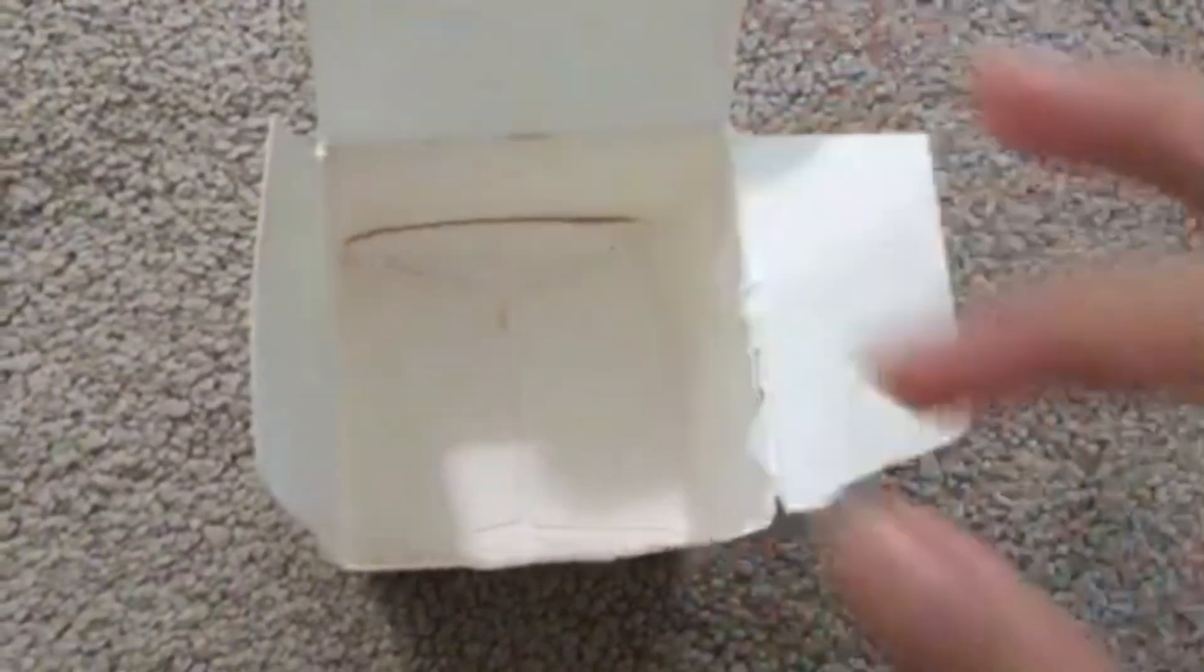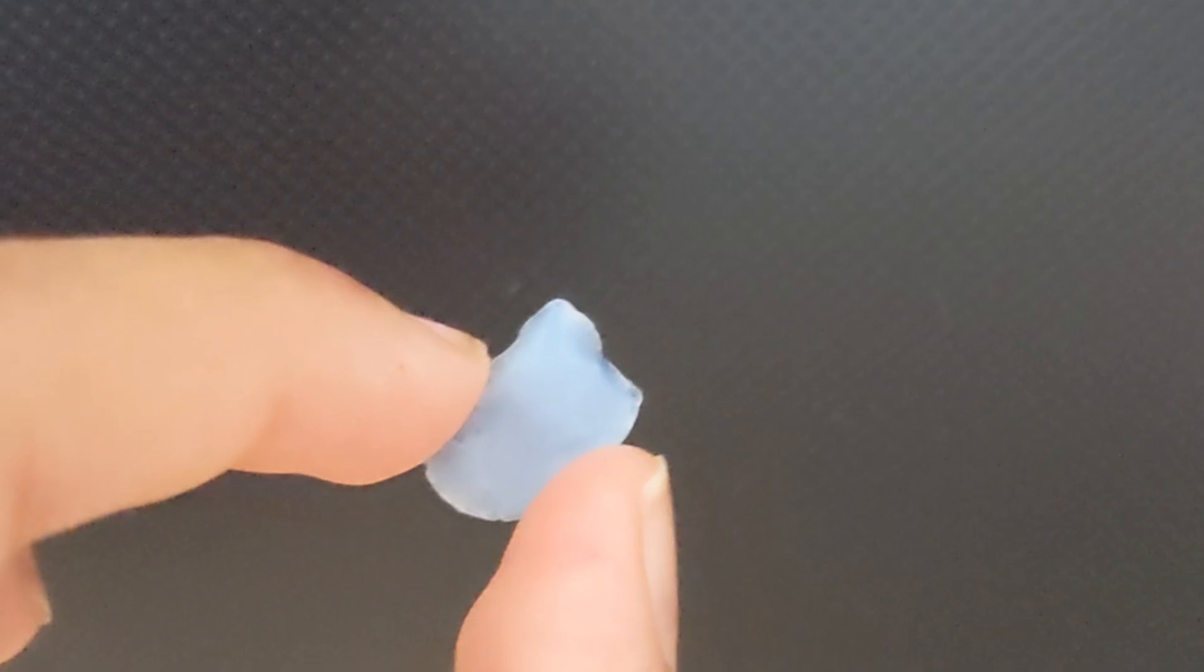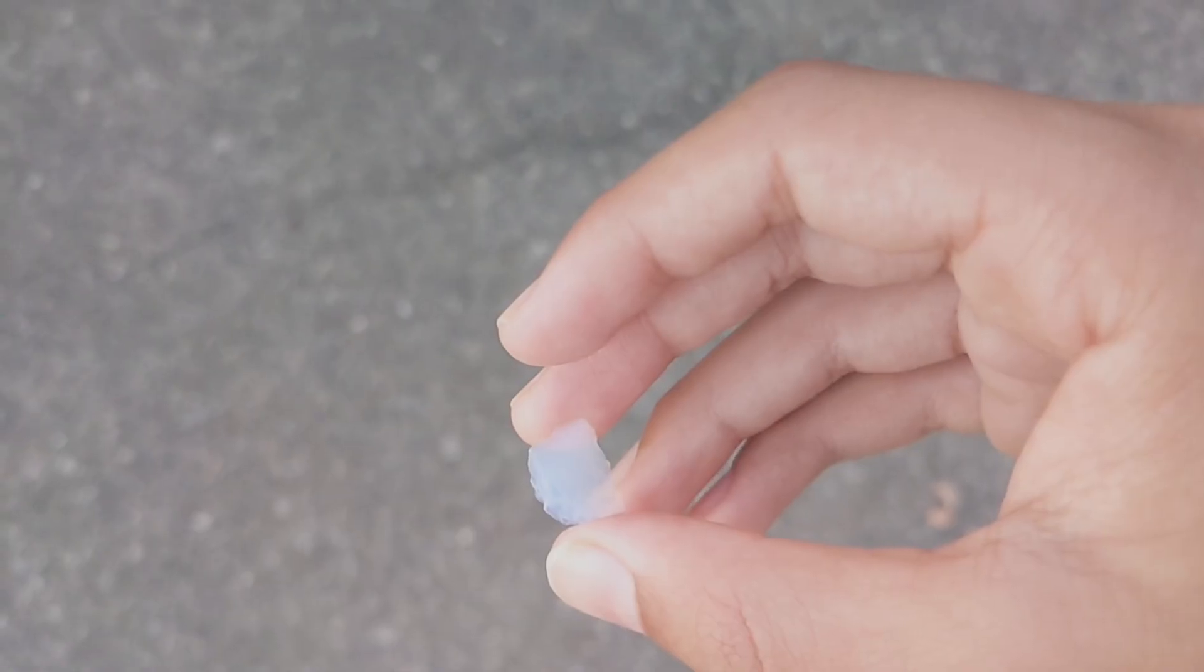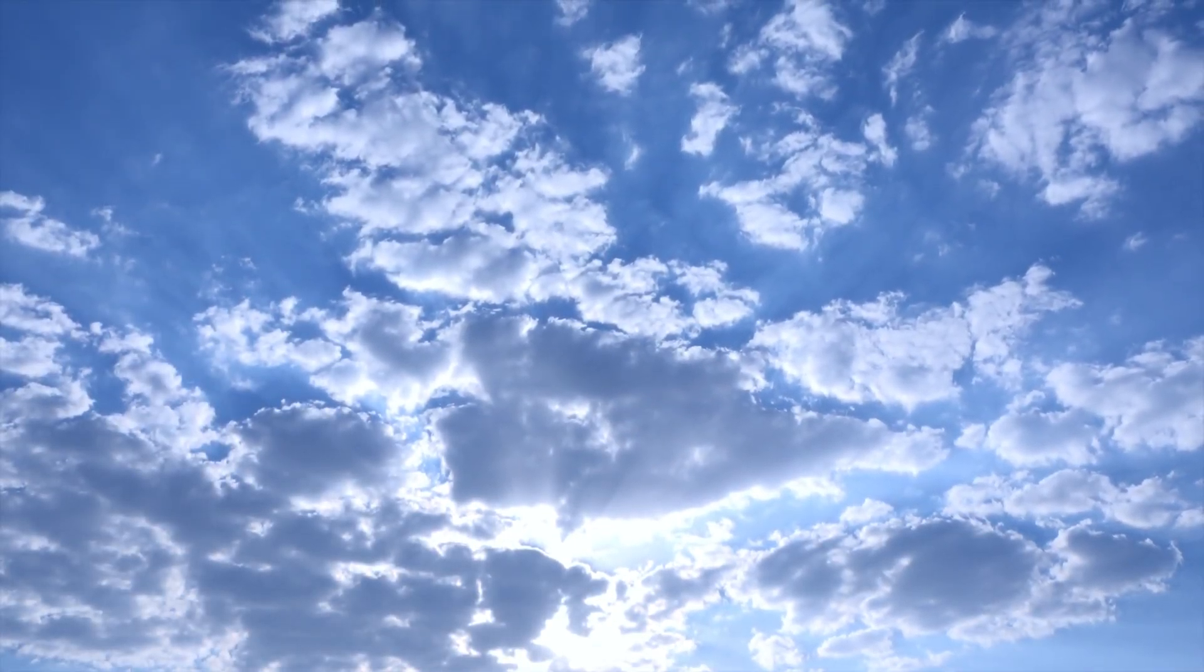So, aerogel looks transparent on a white background and blue on a darker one. But, what color would this piece be if I held it up to the blue sky? Even bluer than it already is?